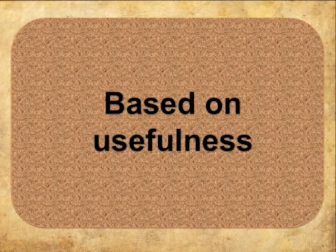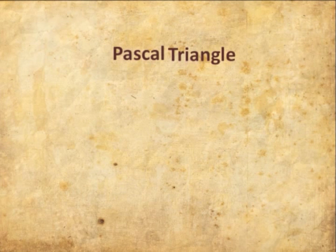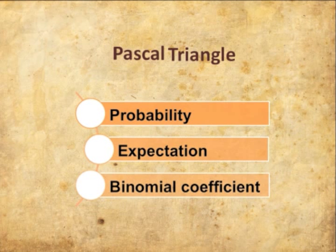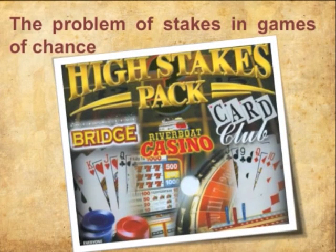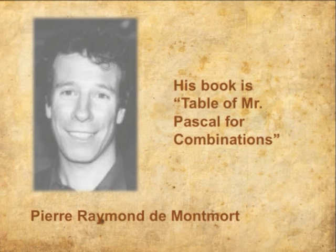The third reason is based on usefulness. As we know, Pascal was not the inventor of the arithmetic triangle, but his name is forever linked with the triangle and given credit because of how he applied and used it with probability, expectation, and exposition of the properties of the binomial coefficient. Pascal also applied the arithmetic triangle to the problems of stakes in games of chance, in the section entitled 'Utilization of the arithmetic triangle to determine the number of games required between two players who play a large number of games.' It was also used for gambling. Pascal's Triangle was developed because it could be applied in real life. Gambling was written about in a book by Frenchman Pierre Raymond de Montmort, who referred to the triangle as the table of Mr. Pascal for a combination. Because of him, it finally became known as Pascal's Triangle.